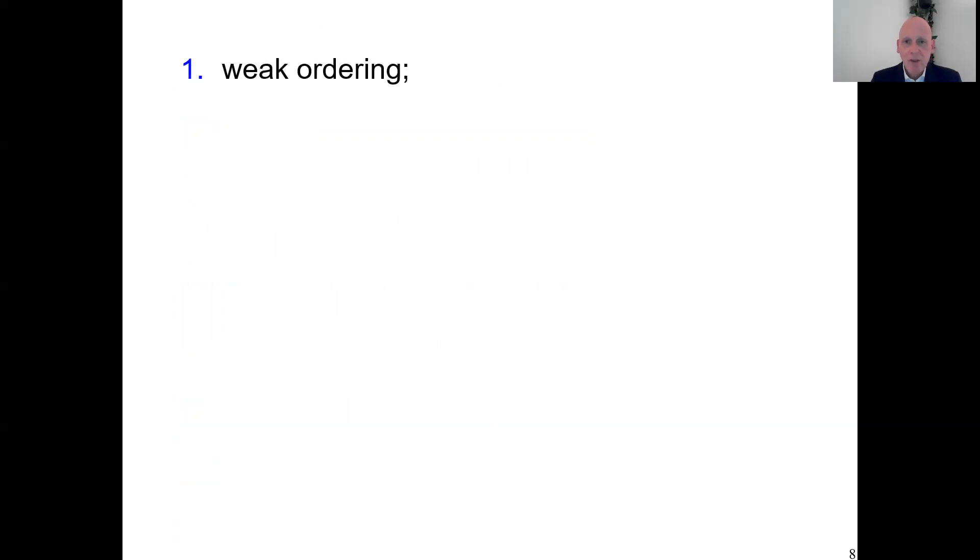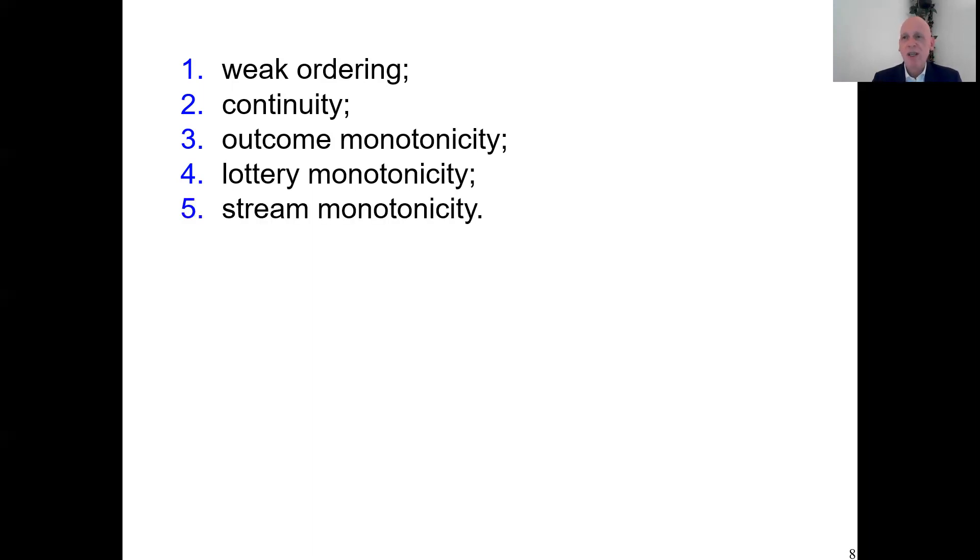So weak ordering: transitivity, completeness, continuity, usually Euclidean continuity, outcome monotonicity. If you are facing a matrix and in one cell you increase the outcome a bit, you improve the outcome a bit, the matrix as a whole becomes strictly better from that. We have two components. We can talk about two kinds of monotonicity. We also assume lottery monotonicity, that means if you are facing a matrix and one time point you replace the lottery by a better lottery, you improve it there, then the matrix as a whole improves strictly from that. Similar story for outcome streams. If for some side of the die, you look at the outcome stream there, you replace it by one that you like more, and remember we have orderings of the lotteries and the outcome streams, so we can say that if you improve an outcome stream there, then the matrix as a whole becomes better. So these are the kind of routine conditions everybody assumes, not the critical ones.